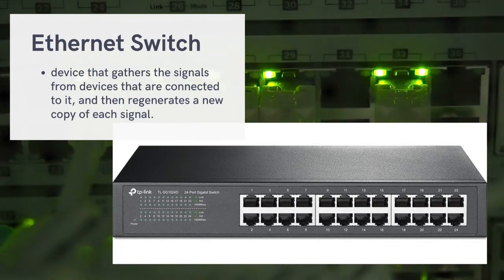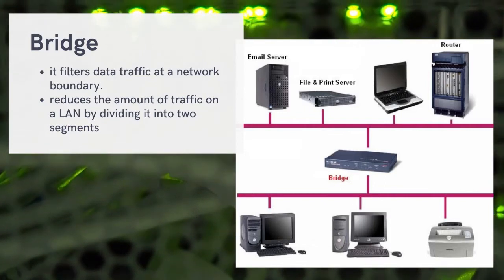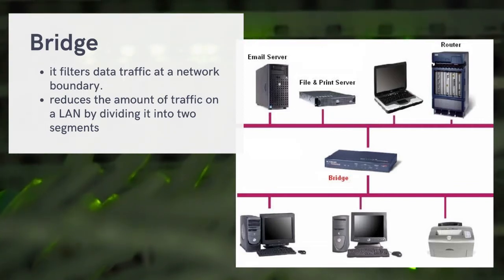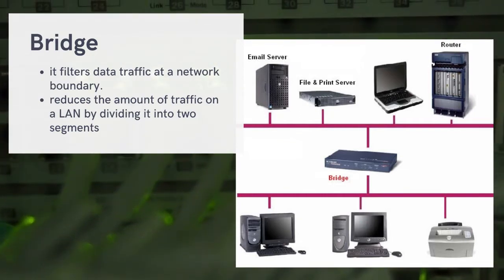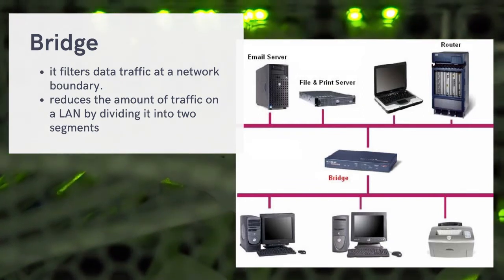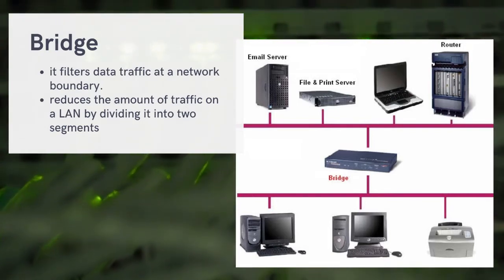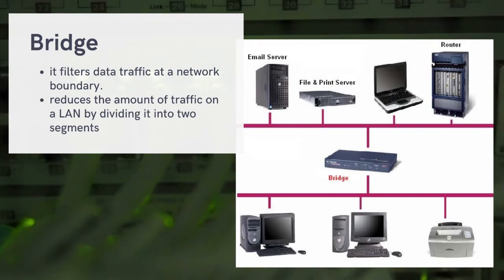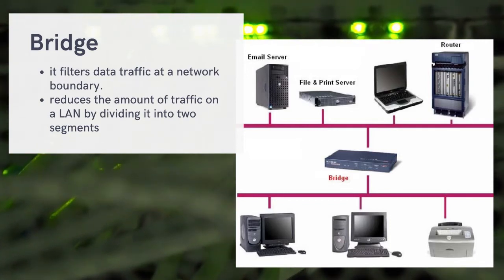We also have the bridge, which filters data traffic at a network boundary. The bridge reduces network traffic — meaning the congestion of data passing through our network. When data is congested, it travels more slowly from sender to recipient. What the bridge does is divide one LAN or network into two segments, creating two pathways for data to pass through.